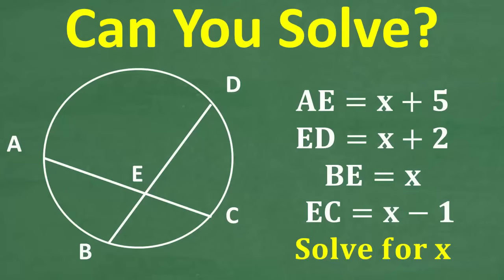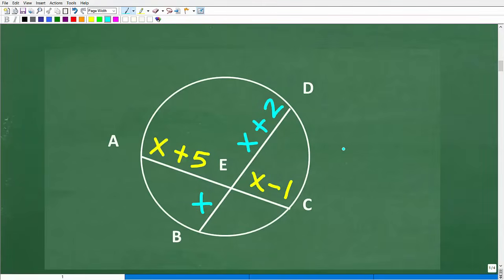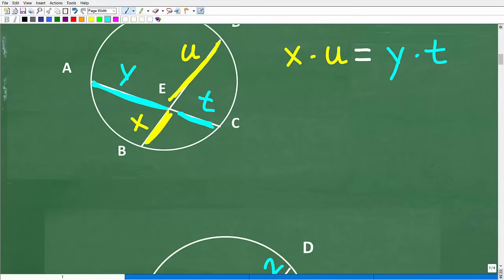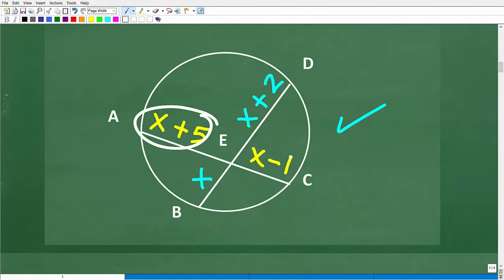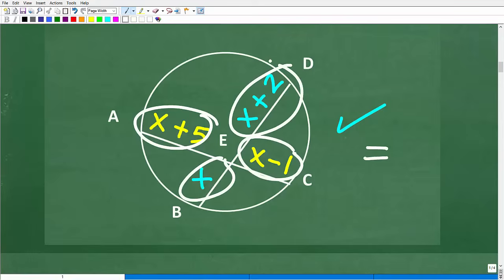Remember, here is our situation. We have these segments already defined. I want you to remember this. AE, this part right here, is x plus 5. ED, which is this part, is x plus 2. BE is x, and then EC is x minus 1. So you can see we have our two chords that intersect, and then we have these segments here. What you want to do is apply this formula with these variable expressions.